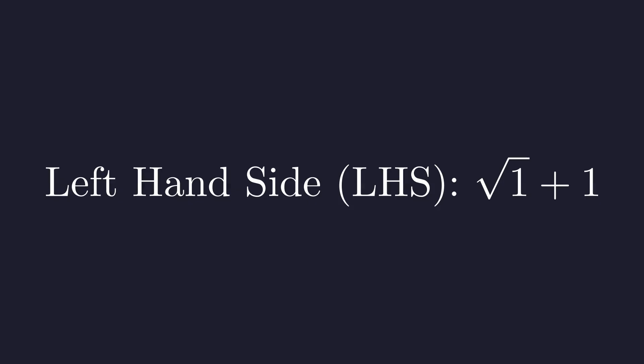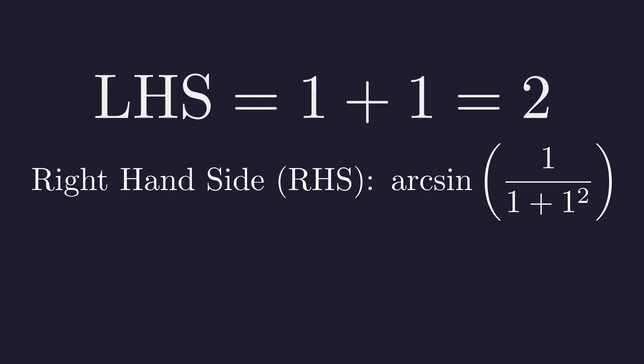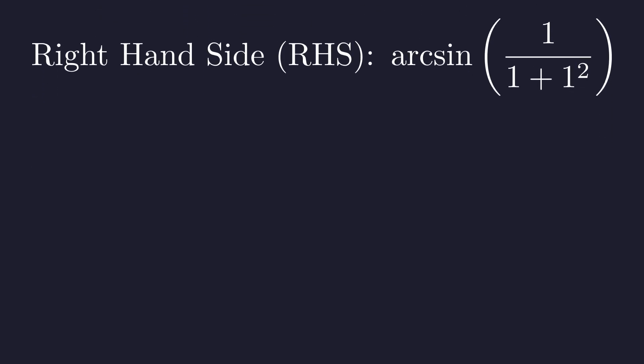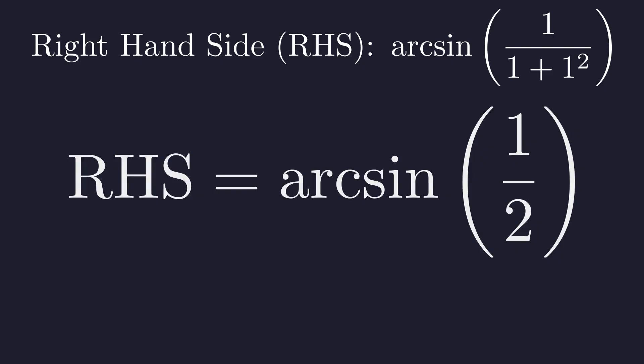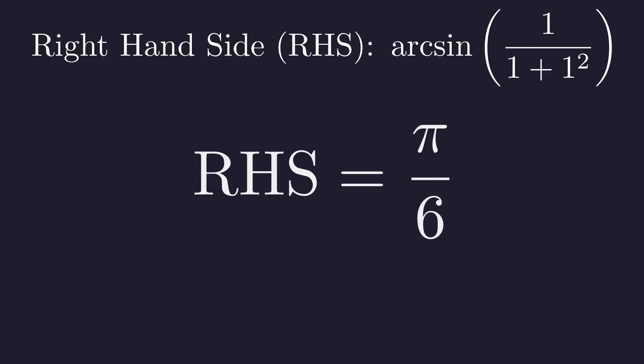First, let's evaluate the left-hand side at our point. The square root of 1 is 1 plus 1 gives us 2. Now let's evaluate the right-hand side. This simplifies to the arcsin of 1 half. The angle whose sine is 1 half is pi over 6 radians.